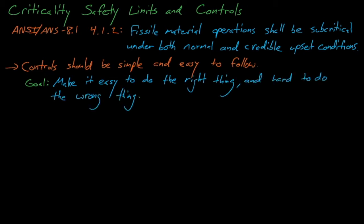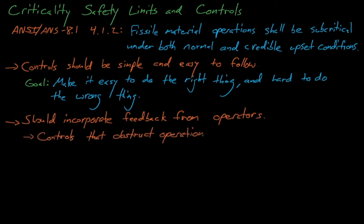Therefore, our goal when designing criticality controls is always to make it easy to do the right thing and hard to do the wrong thing. If the safe way to do things also happens to be the path of least resistance, then workers are very likely to do things that way. Next, we should work extensively with operations when we design criticality controls. After all, they're the ones who are going to have to comply with the controls that we implement, and any controls that significantly obstruct operations are likely to be circumvented.